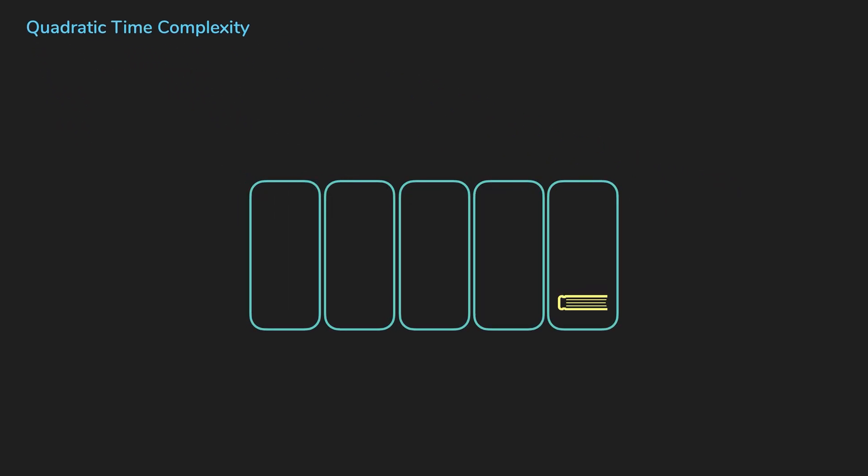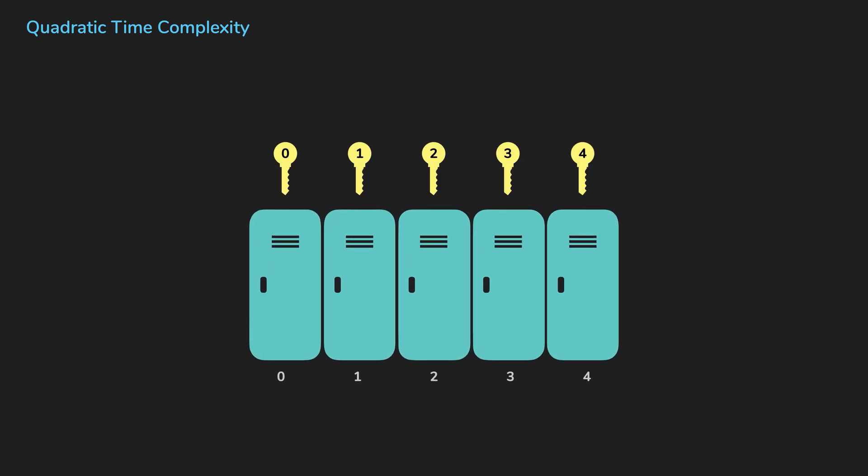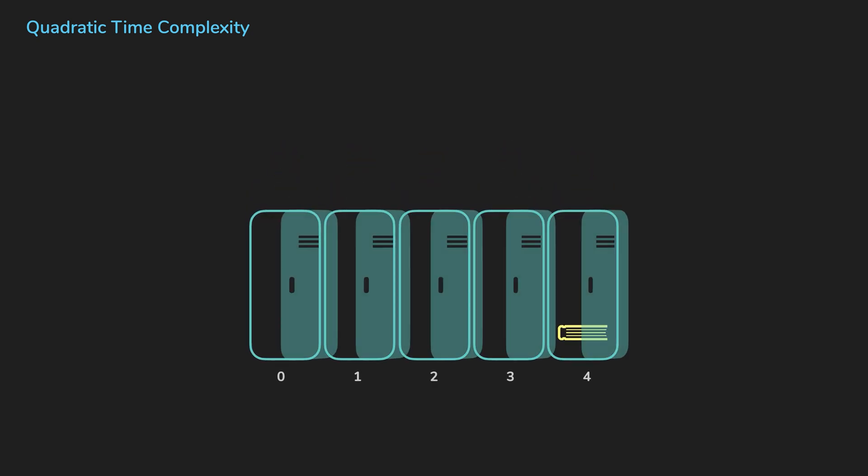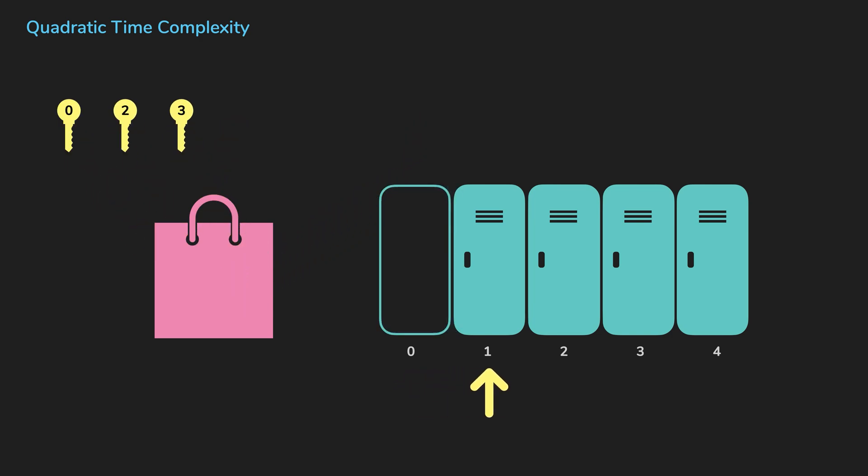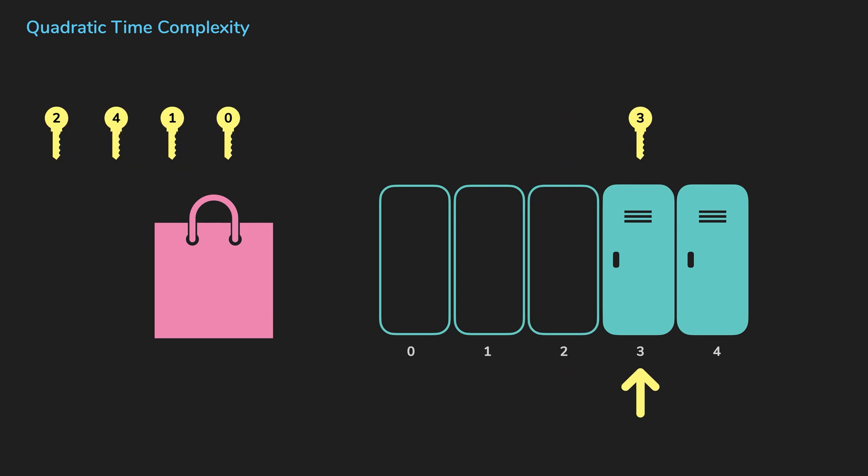Let's put a little twist to the first example. Let's say you need a key to open each locker and the keys are jumbled up in a paper bag. You pick a random key and place it outside of the bag until you get the key for the locker you want to open. Once you have opened the locker, you'll put everything back in the bag and start again. You will have to repeat this process to open each locker and find the book.